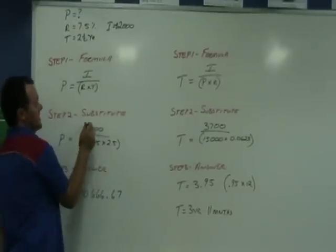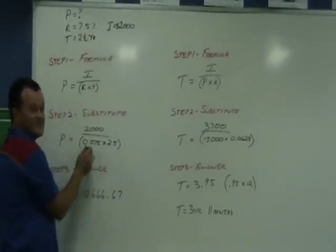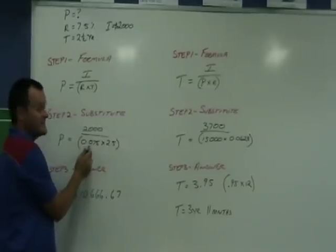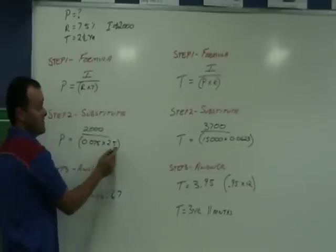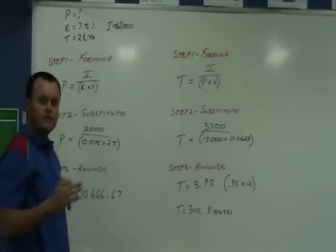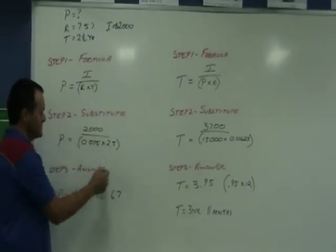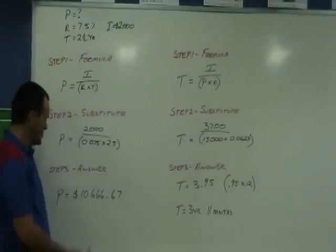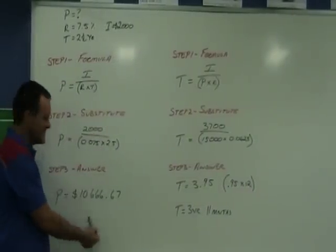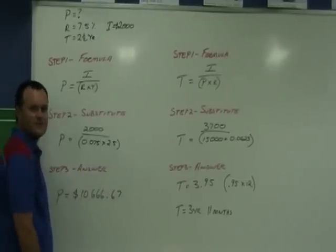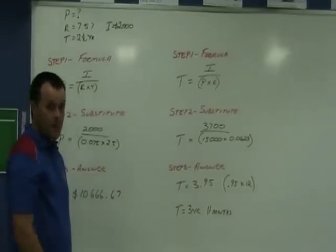Substitute in. $2,000, $0.075, remember, as a decimal fraction. 2 and a half years is 2.5. 0.5 is half as a decimal. Put that into our calculator with those brackets in. And we get a principal, step 3 answer, $10,666.67. Hope you got that one right. Give it a tick if you did.